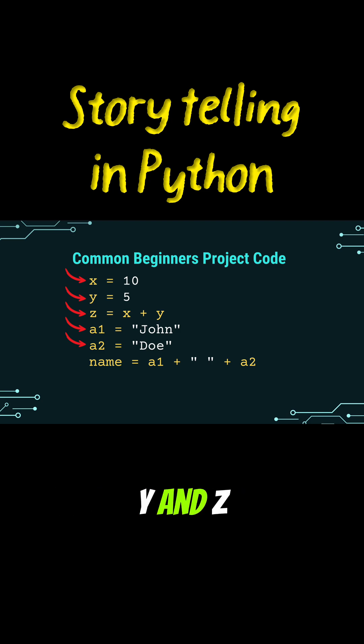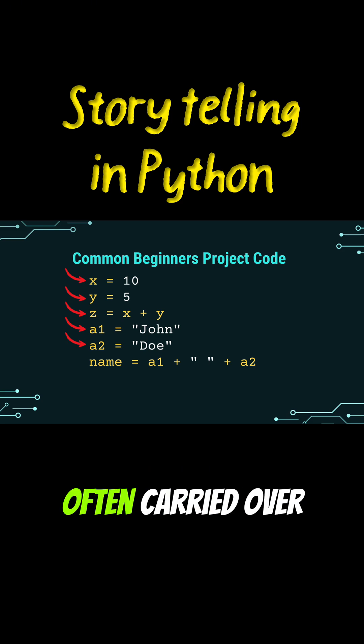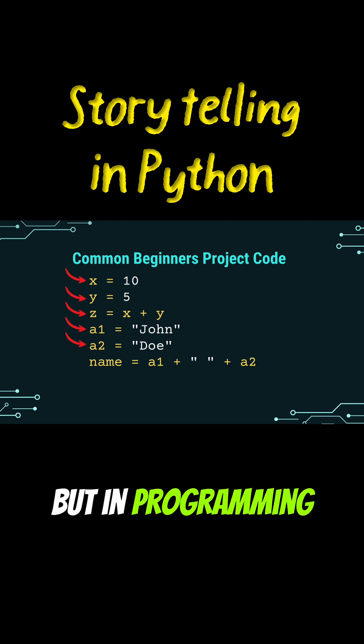What do x, y, and z represent? Are they prices, counts, or coordinates? Without more context, we have no idea. This style is often carried over from mathematics, but in programming, clarity is far more important than brevity.